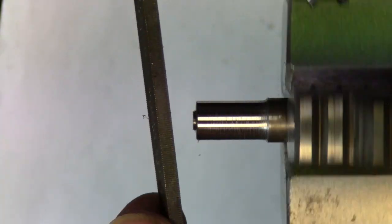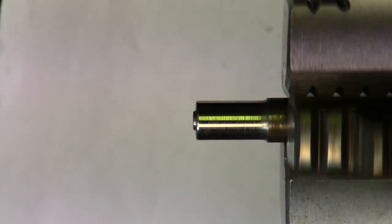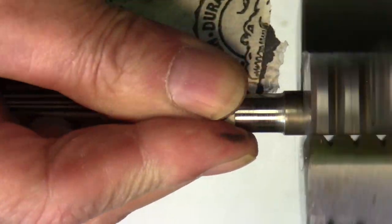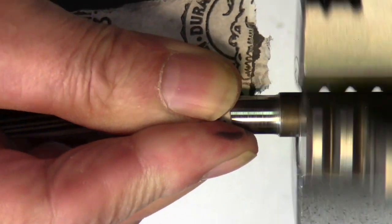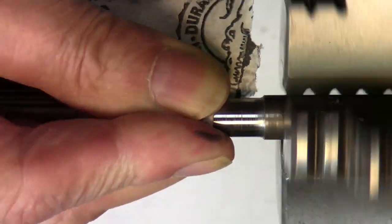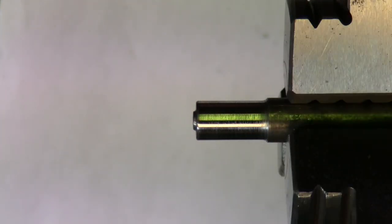Knock that sharp edge off. I'm going to hit it with the 600 paper again to polish that edge.